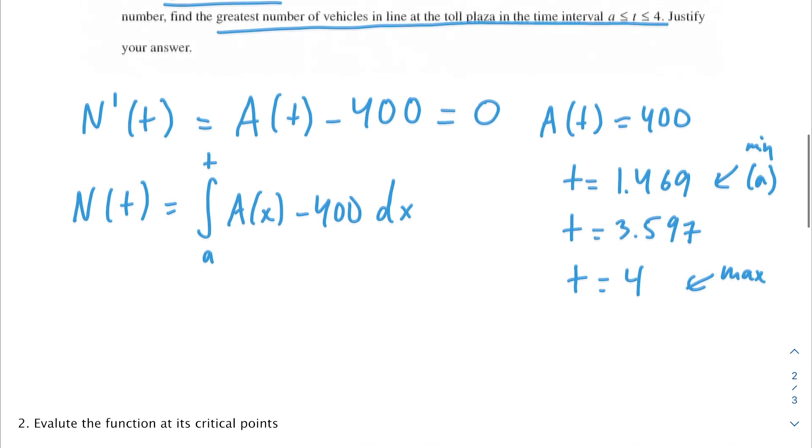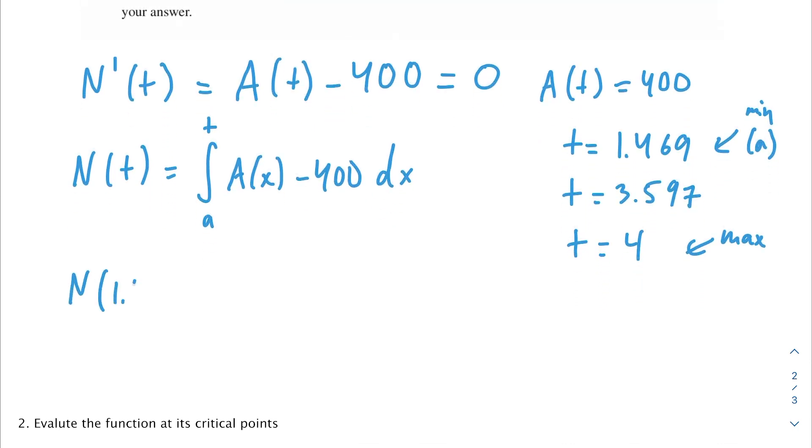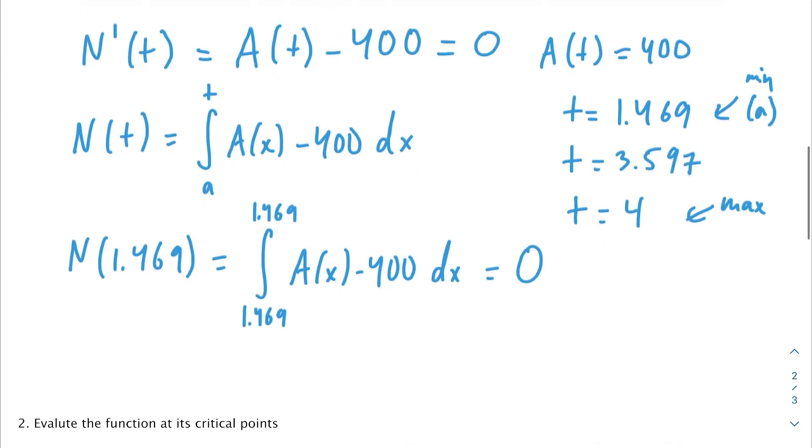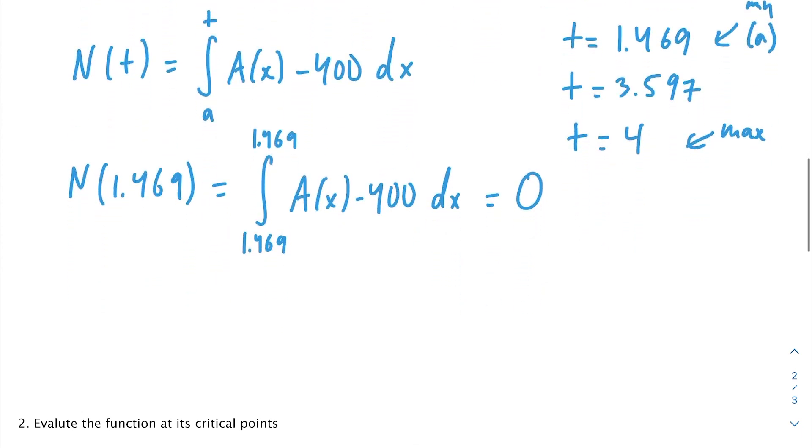For the first number, N(1.469), if we plug that in, it's going to be from 1.469 to 1.469. Hopefully you can guess what this is going to equal. This is basically just going to equal 0. So probably not going to be when the greatest number of vehicles are in line, but you never know.